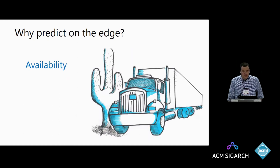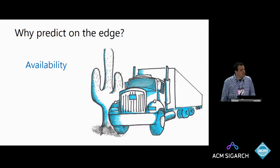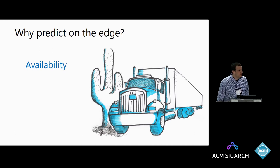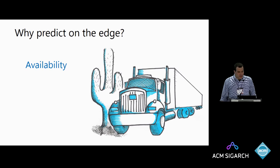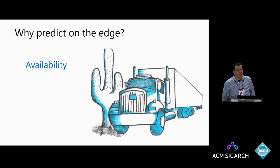Another reason is availability. If you think about predictive maintenance in a truck going through the desert, or trains, ships, oil rigs — we were talking to a company that runs smart oil rigs, and they have connectivity 20 minutes every six hours when the satellite flies overhead. You can only do it so often. You need to do all the predictive maintenance on the edge. There are a bunch of reasons to push AI to the edge, and this has been the focus of my work for the past two years and a huge focus from Microsoft as well.